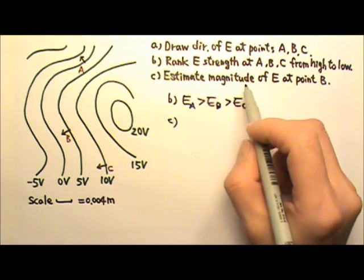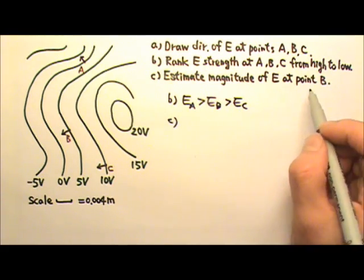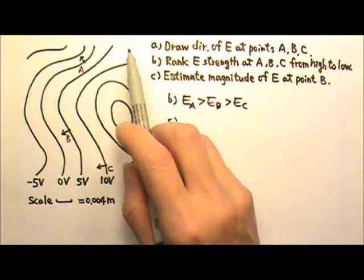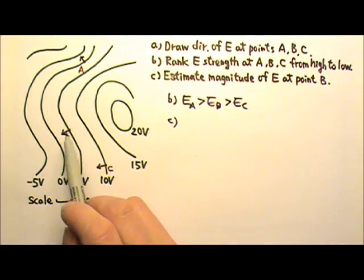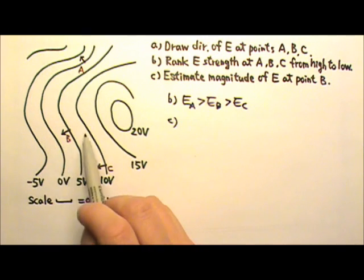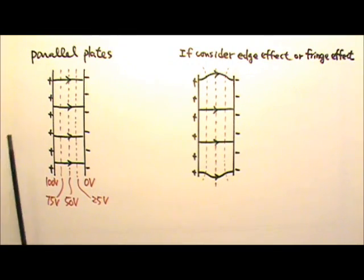And then we have to estimate the magnitude of electric field at point B. Now we don't have uniform electric field over here, but near B, the equipotential surfaces are almost like these equipotential surfaces in uniform electric field.